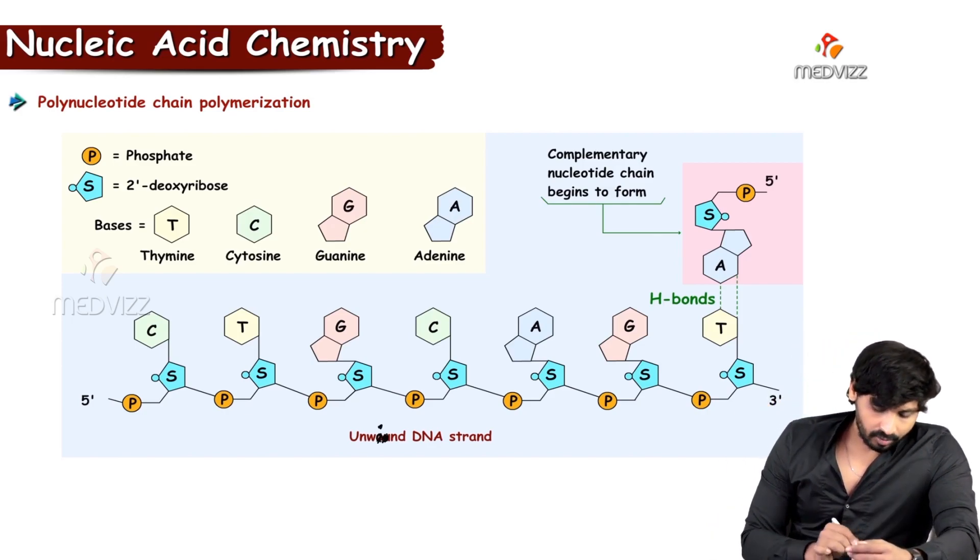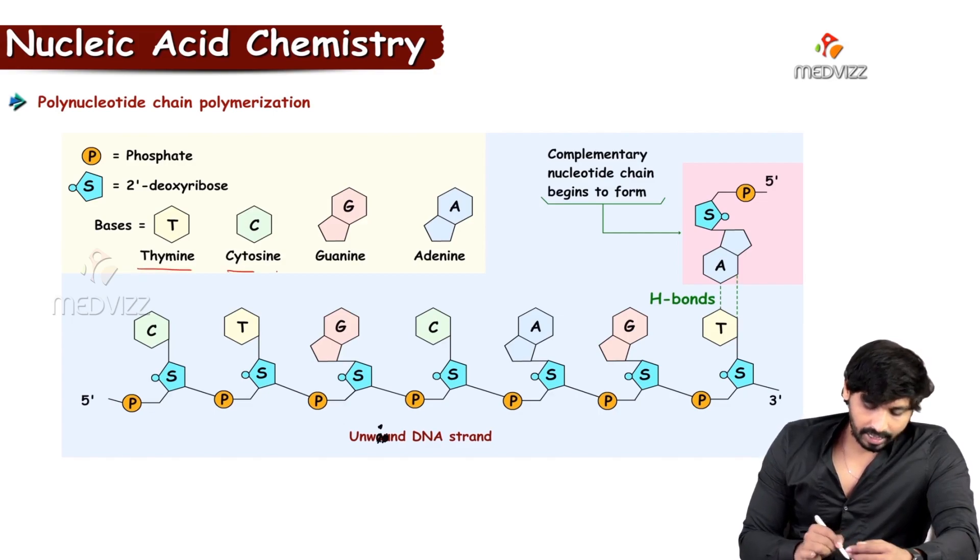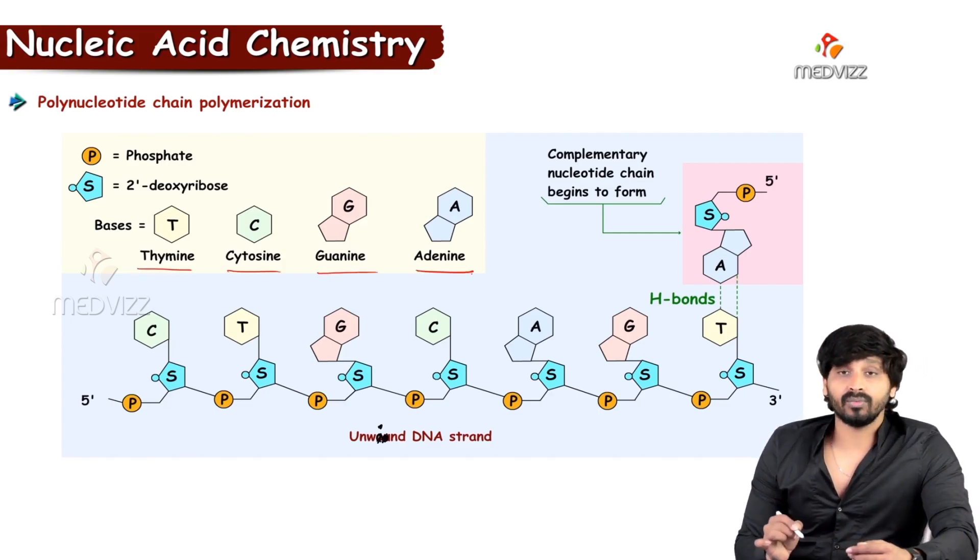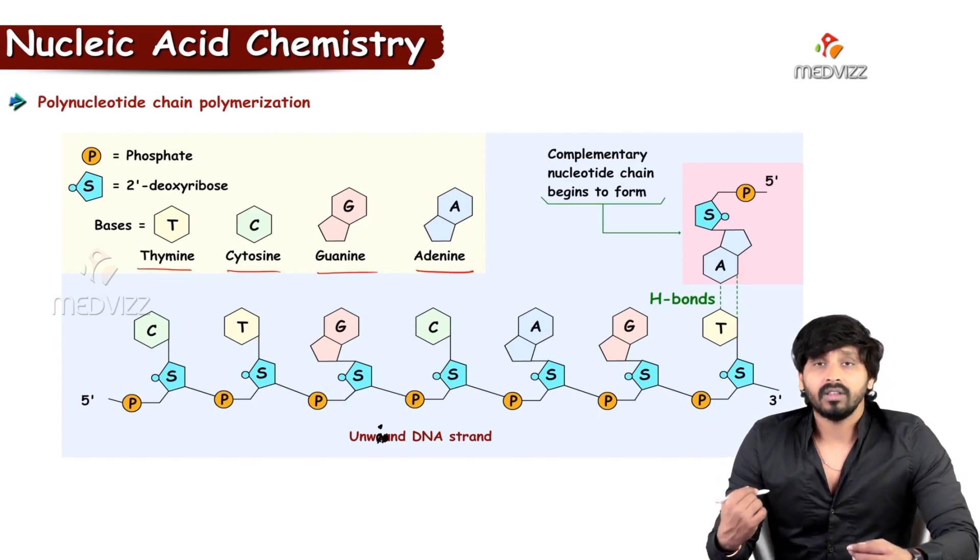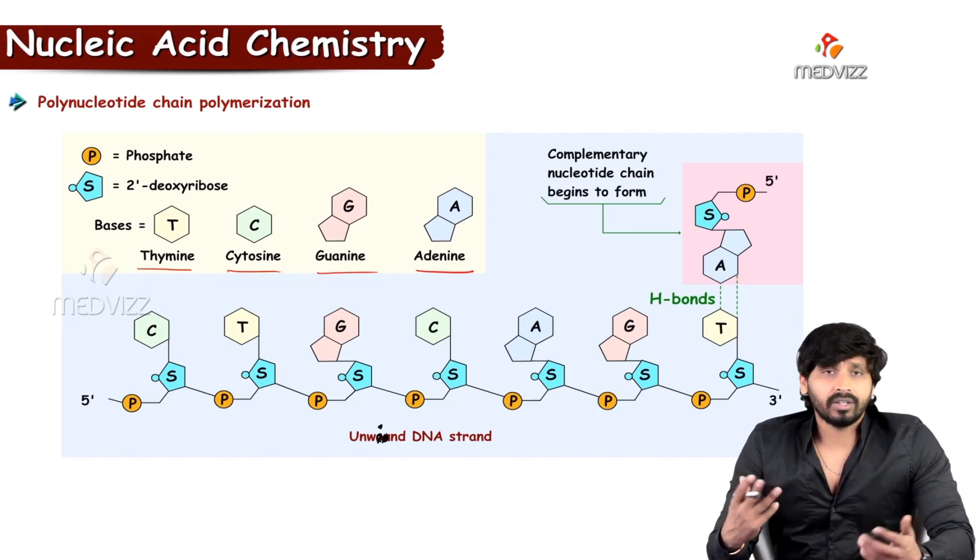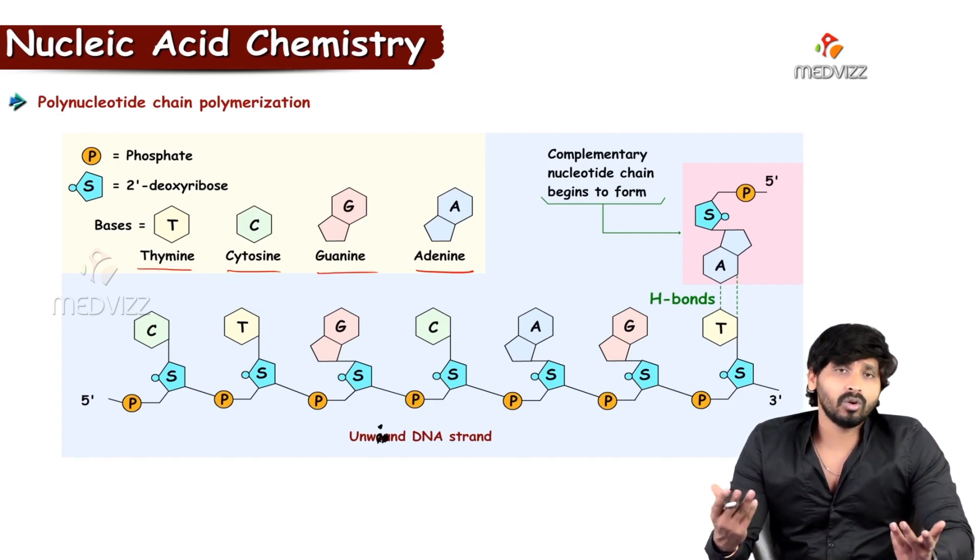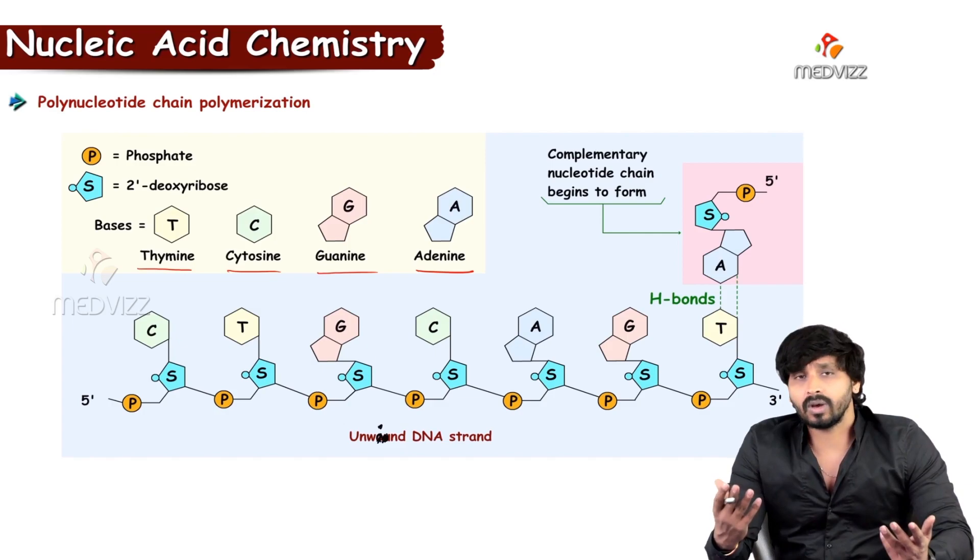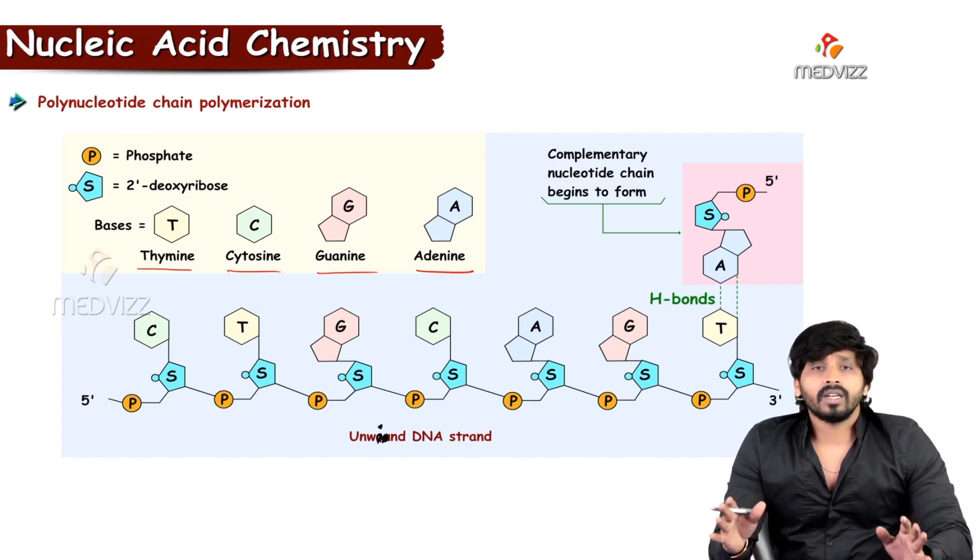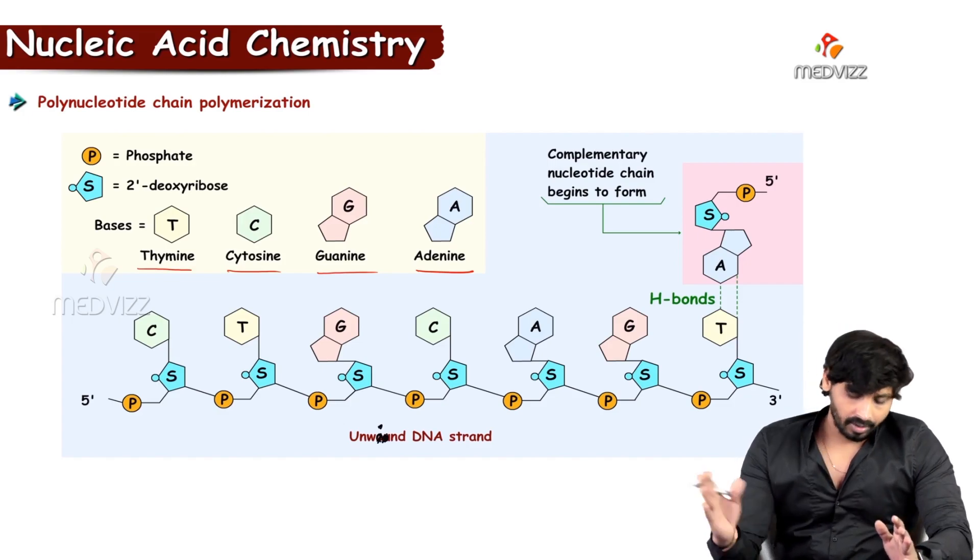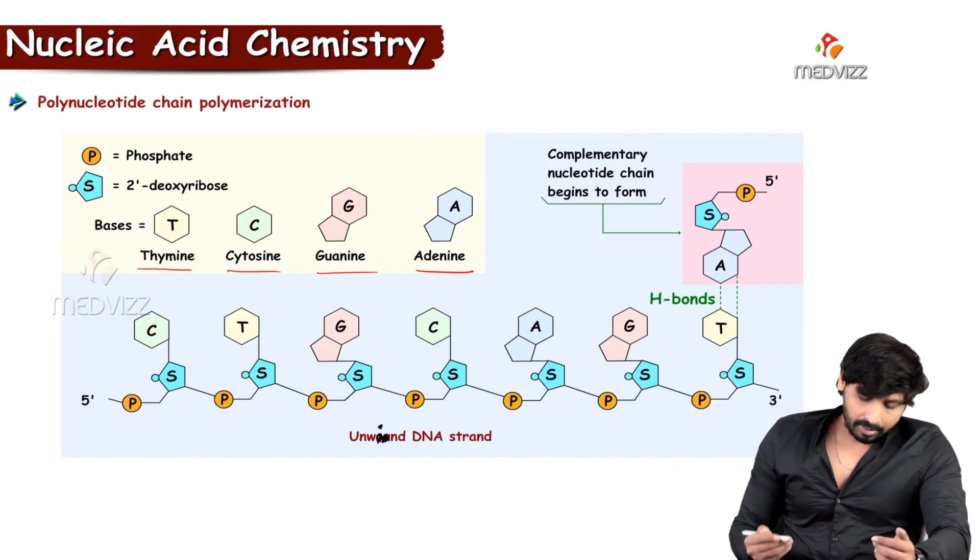And you see here the bases, we have thymine, cytosine, guanine, adenine in case of DNA. We are talking because for us, the genetic material is DNA. And in some bacteria and in some viruses, the genetic material sometimes is RNA. You all know HIV, human immunodeficiency virus. For them, RNA is a genetic material. So we will discuss about DNA only.